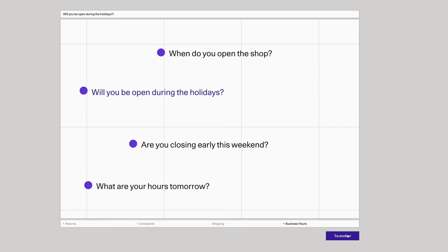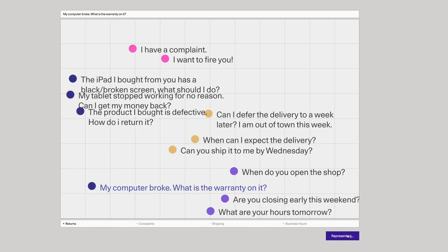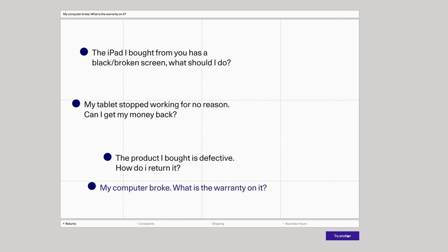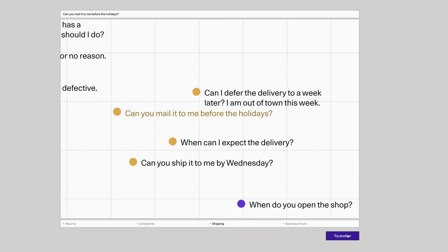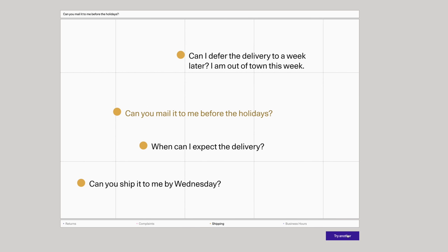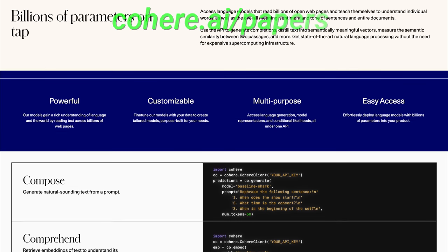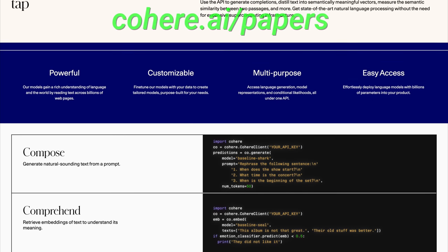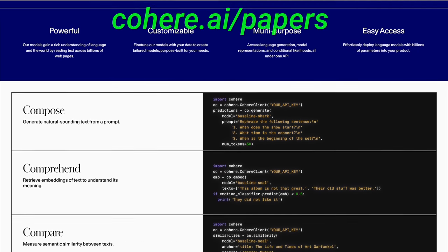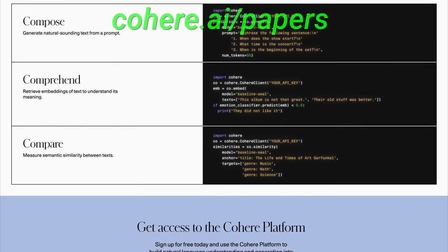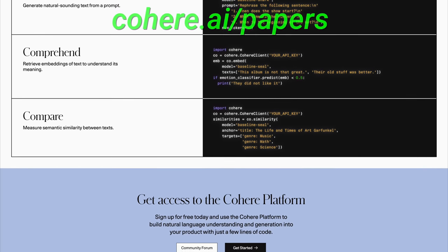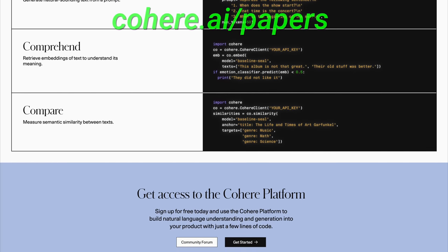For instance, it can be used to automatically determine whether your messages are about your business hours, returns, or shipping. Or it can be used to generate a list of possible sentences you can use for your product descriptions. Make sure to go to Cohere.ai slash papers, or click the link in the video description and give it a try today. It's super easy to use. Thanks for watching and for your generous support, and I'll see you next time!